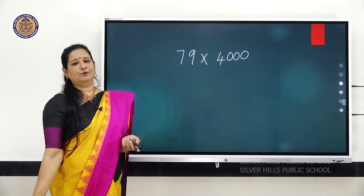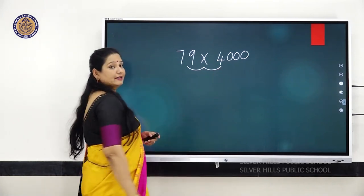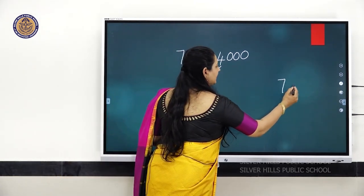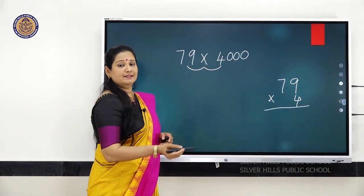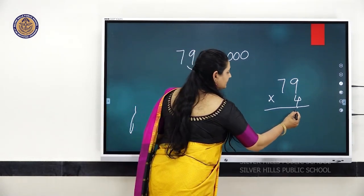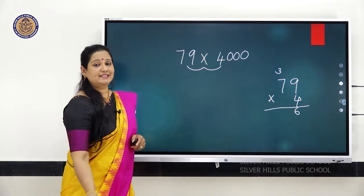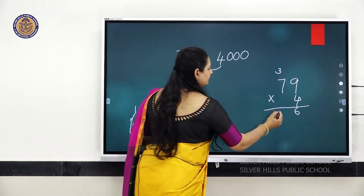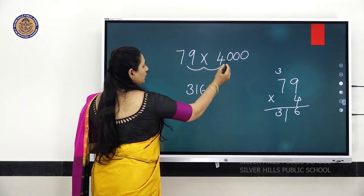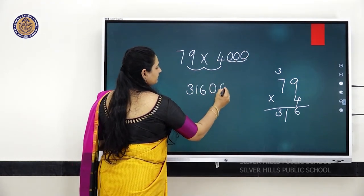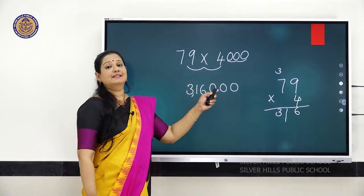Let's do an example. 79 into 4,000. First, multiply 79 by 4. 9 fours are 36 — write 6, carry 3. 7 fours are 28, plus 3 is 31. So you get 316. Then add 3 zeros, so the number becomes 3,16,000.